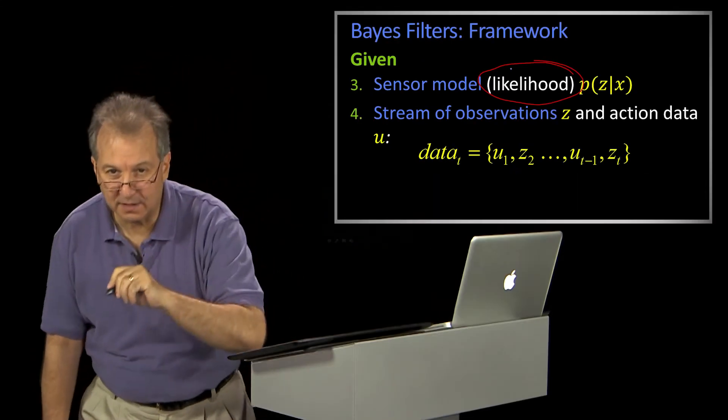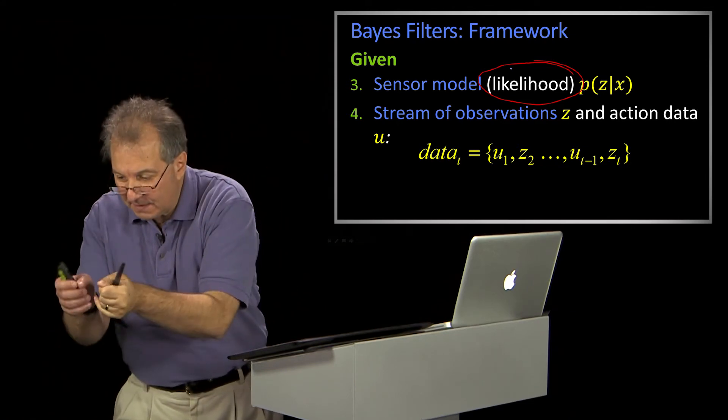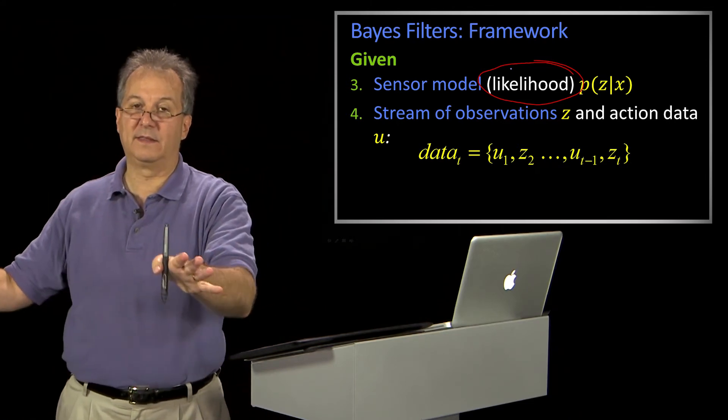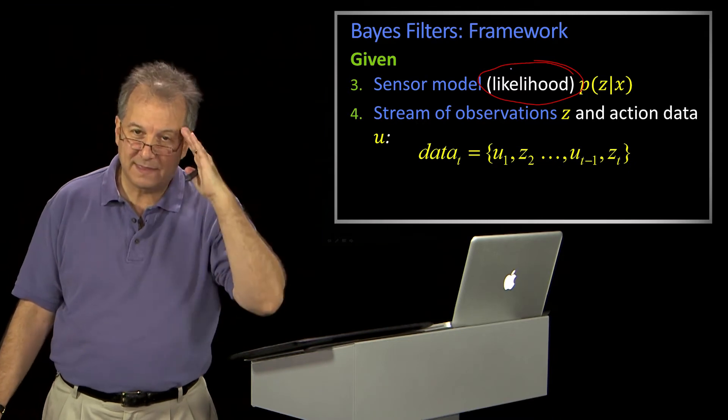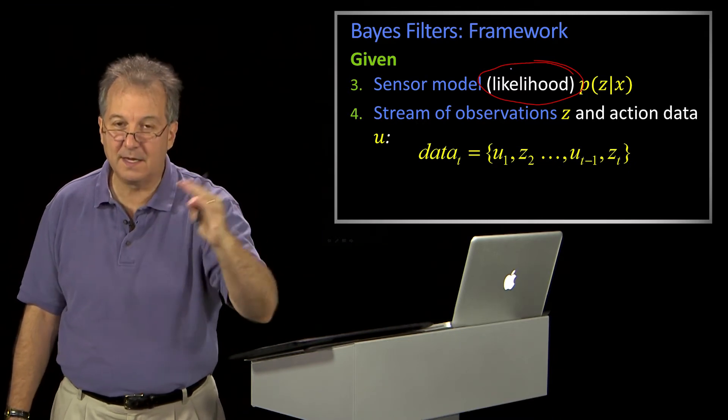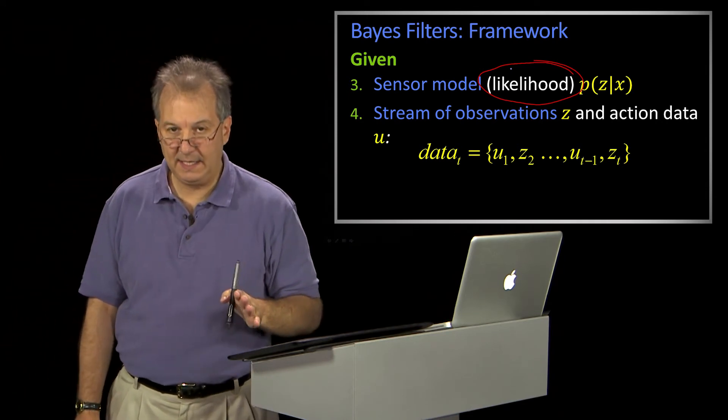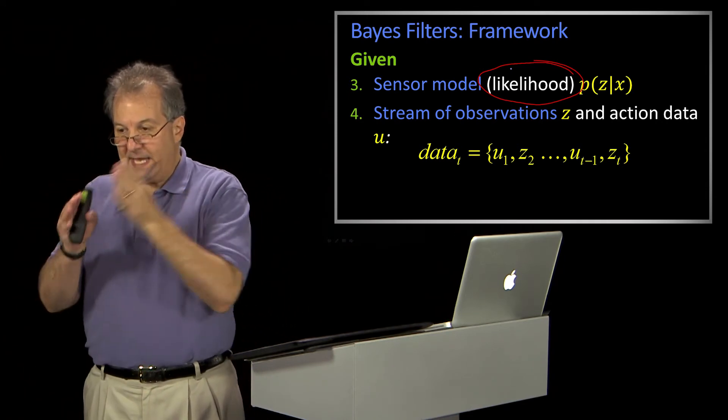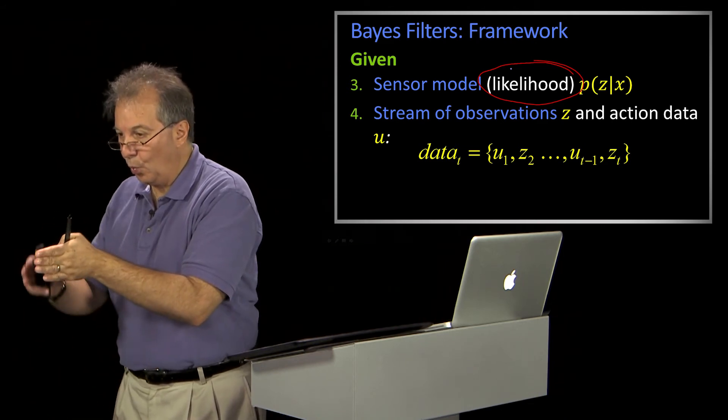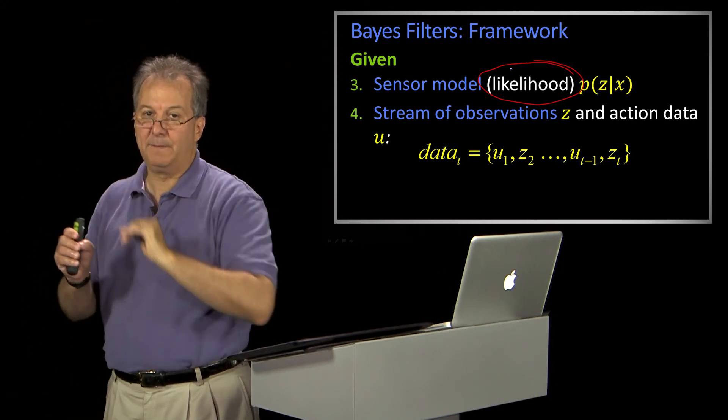I'm going to tell you what it isn't first. It is not given some sensor reading, where do I think the object is. You might think that's what it is, but then you would be thinking incorrectly. No. A likelihood model is, if the object were really someplace, what's the likelihood of my measurement?